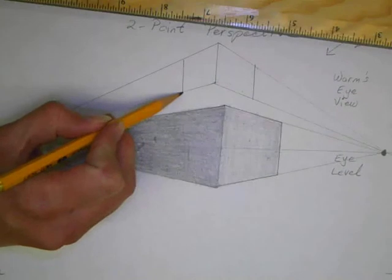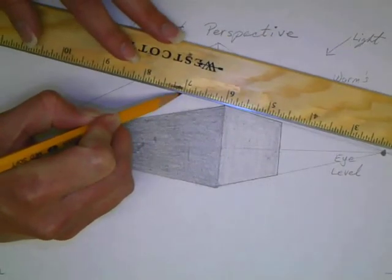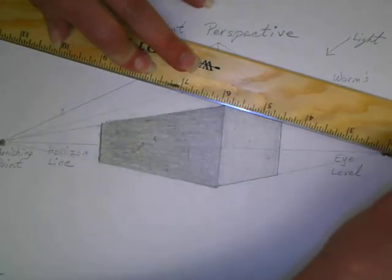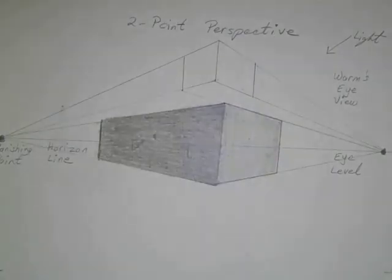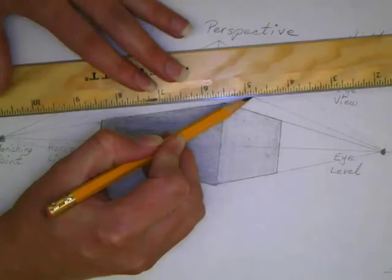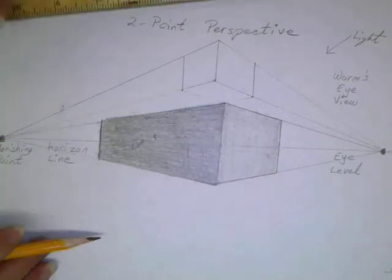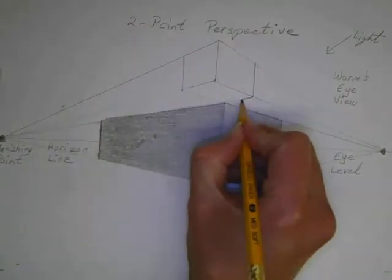Okay, now from the bottom of this vertical line, it's going to line up to the right vanishing point. So I'm going to line it up with the right vanishing point and draw my line. I'm creating the bottom of the box now, because remember, we're looking up at it. So now we can see the bottom of the box. And from the bottom of this vertical line, I'm going to go to the left vanishing point. So here's my box.